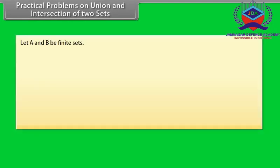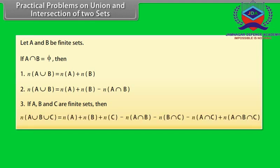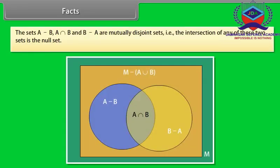Practical problems on union and intersection of two sets. Let A and B be finite sets. If A intersection B equals phi, then N(A union B) equals N(A) plus N(B). In general, N(A union B) equals N(A) plus N(B) minus N(A intersection B). The sets A minus B, A intersection B, and B minus A are mutually disjoint sets; that is, the intersection of any two of these sets is the null set.